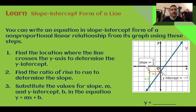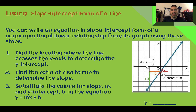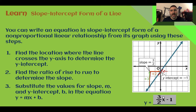Let's learn: slope-intercept form of a line. You can write an equation in slope-intercept form of a non-proportional linear relationship from a graph using these steps. First, find the location where it crosses the y-axis to determine the y-intercept — here the graph crosses right there. Then anywhere on the line, use the ratio of the rise to the run to find the slope. Finally, plug those two values into slope-intercept form. In this case, the slope is up three over two, and the y-intercept crosses the y-axis at negative one, giving us y equals three-halves x minus one.